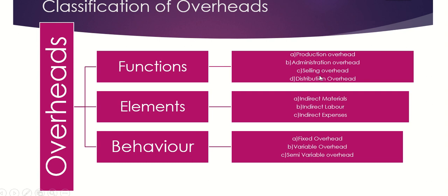Third is selling overhead. These are costs which seek to increase the demand for the product or increase sales orders. In simple words, these are overheads incurred to promote sales. Examples include advertising, salaries and commission of sales personnel, showroom expenses, traveling expenses, bad debts, catalogues, and price lists.